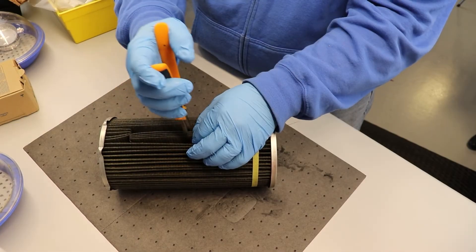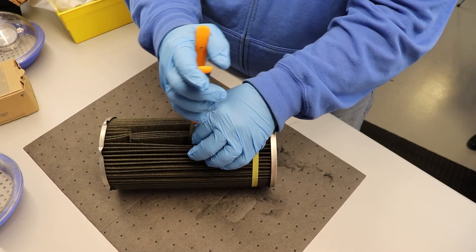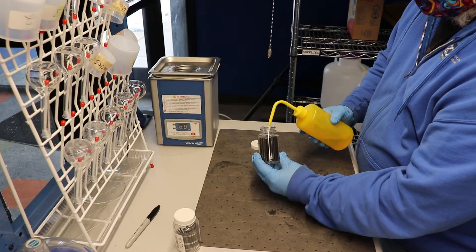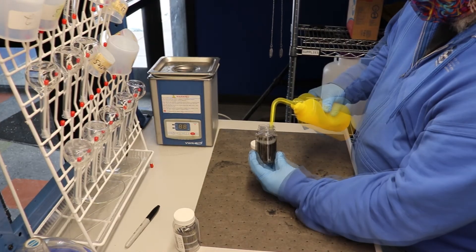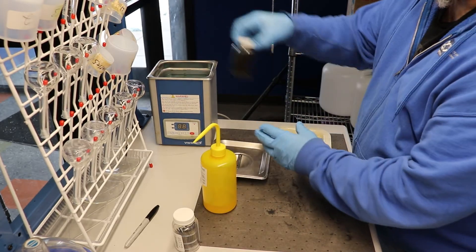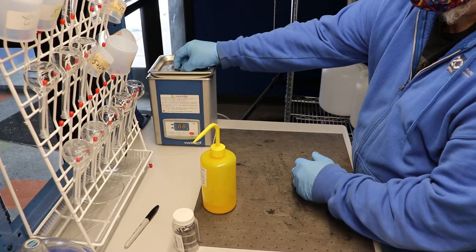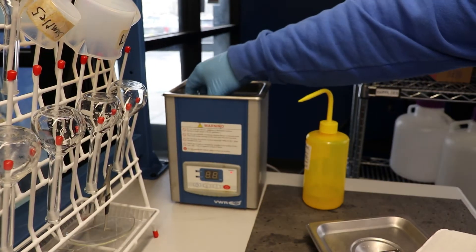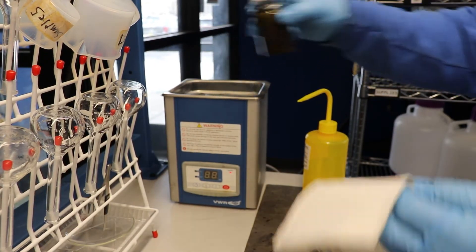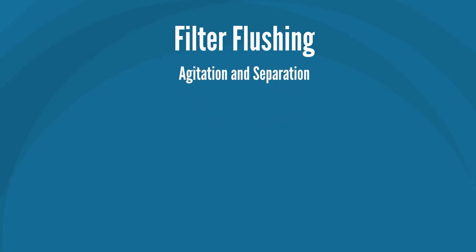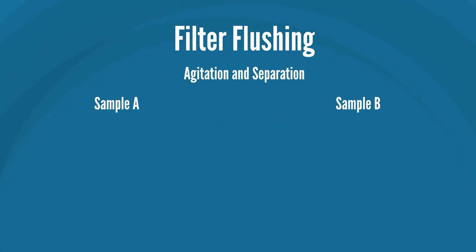Filter Debris Analysis is conducted by first cutting a pleat out of the oil filter. The pleat is then flushed with a solvent and is processed in an ultrasonic bath to remove any debris within the filter pleat. After processing in the ultrasonic bath, the filtered material is agitated and then separated into two samples, A and B.